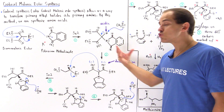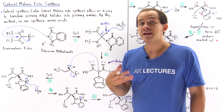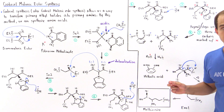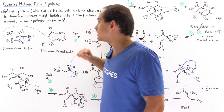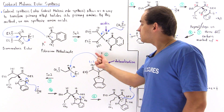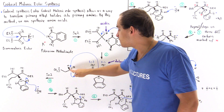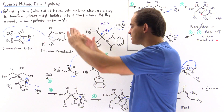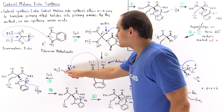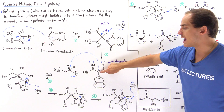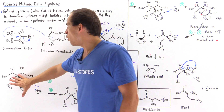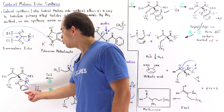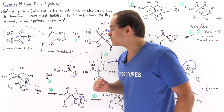Now if we take this resonance-stabilized intermediate and mix it with the following molecule, this carbon will act as a nucleophile in the same way that the nitrogen acted as a nucleophile earlier. This carbon will kick off the bromide ion and attack that carbon. The two hydrogen atoms will bend down, the bond will break, and this entire group will attach itself onto the alpha carbon position, forming the disubstituted malonic ester that contains two different groups attached to the alpha carbon.